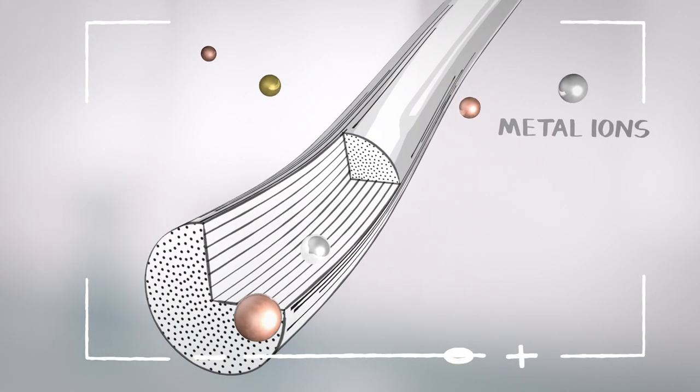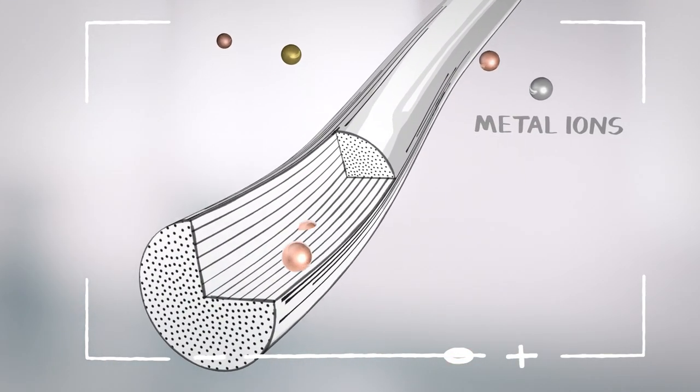There are metal ions in hair, especially near the tips. Metals are bad news when it comes to coloring.